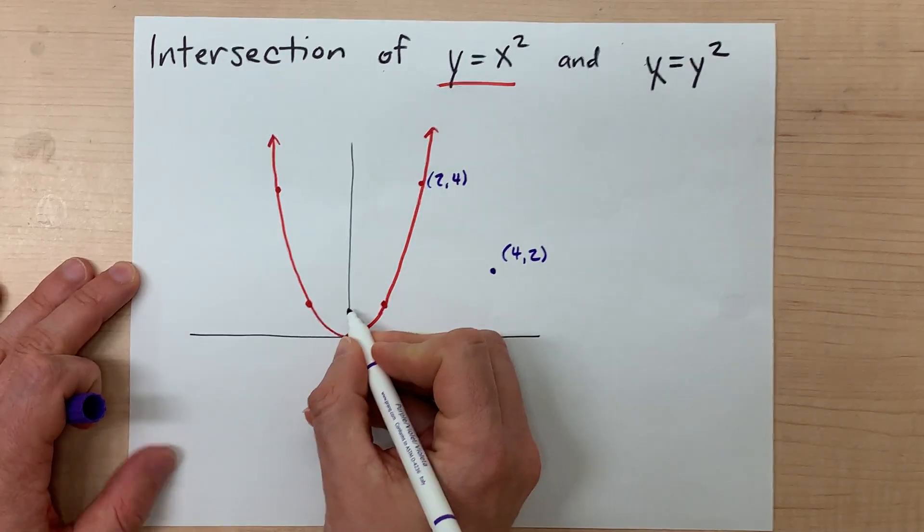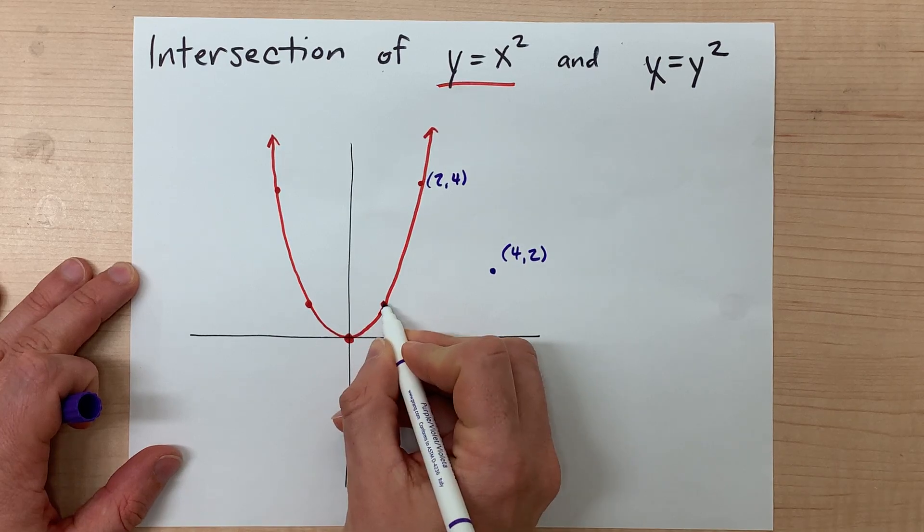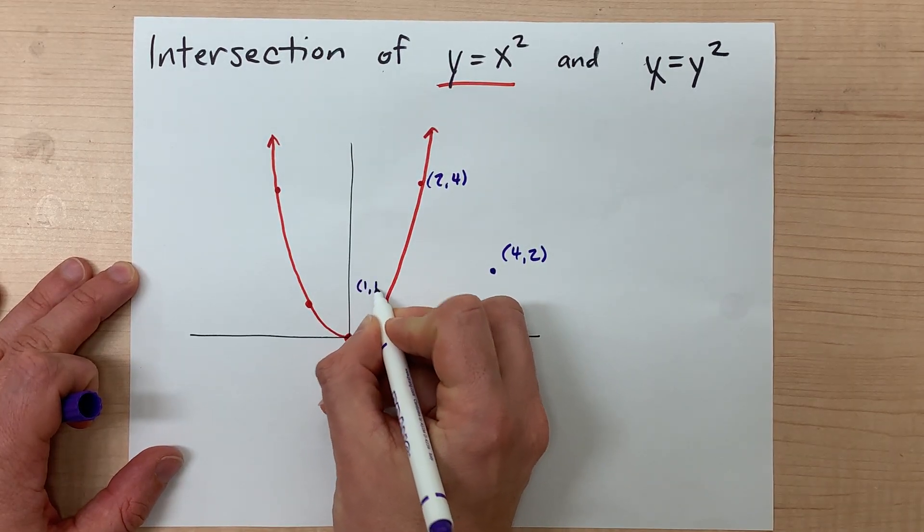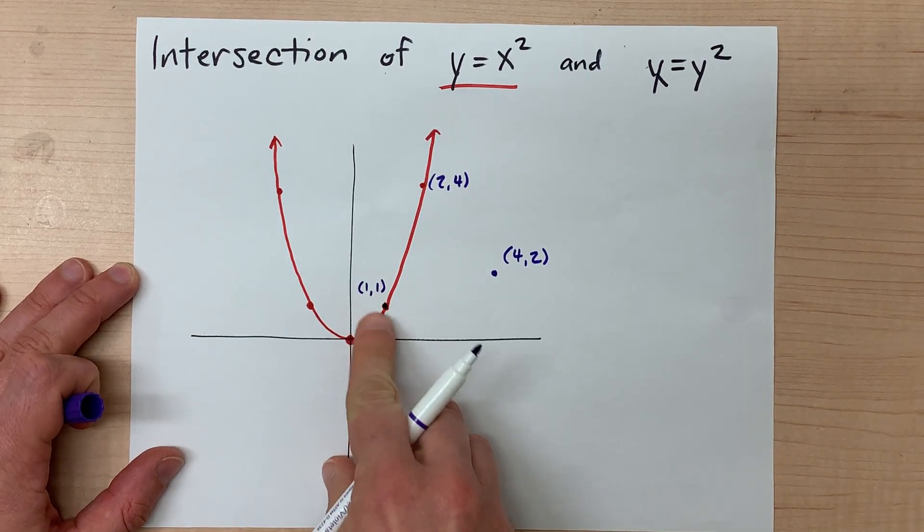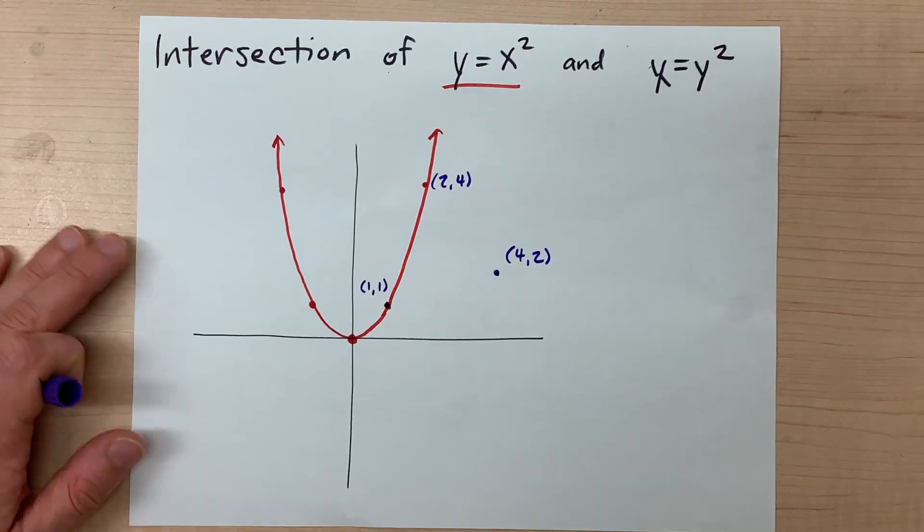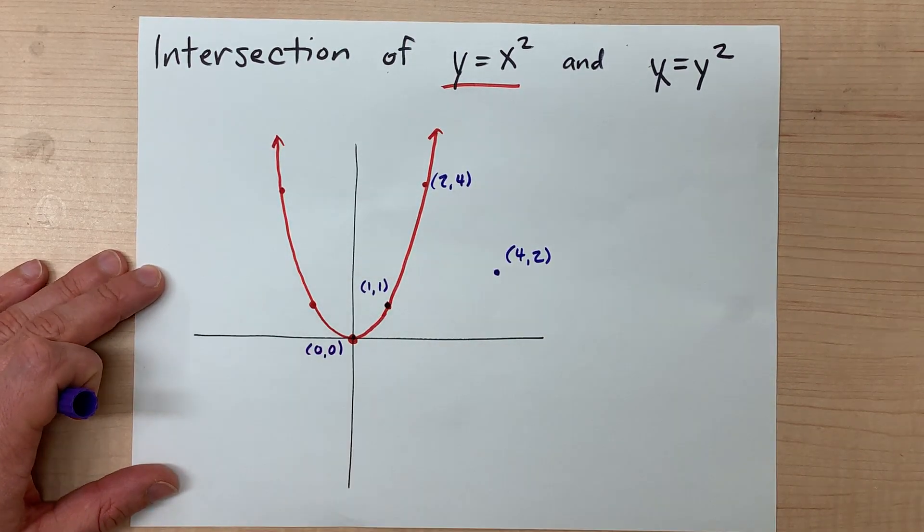Now a y value of 1 squared gives you an x coordinate of 1, and you end up with this same point again. That's because when you flip the x and y coordinates of the point (1,1), you get (1,1), the same point. And actually, that's the case for (0,0) as well.